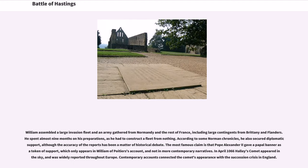William assembled a large invasion fleet and an army gathered from Normandy and the rest of France, including large contingents from Brittany and Flanders. He spent almost nine months on his preparations, as he had to construct a fleet from nothing. According to some Norman chronicles, he also secured diplomatic support, although the accuracy of the reports has been a matter of historical debate. The most famous claim is that Pope Alexander II gave a papal banner as a token of support, which only appears in William of Poitiers' account. In April 1066 Halley's Comet appeared in the sky, and was widely reported throughout Europe; contemporary accounts connected the comet's appearance with the succession crisis in England.